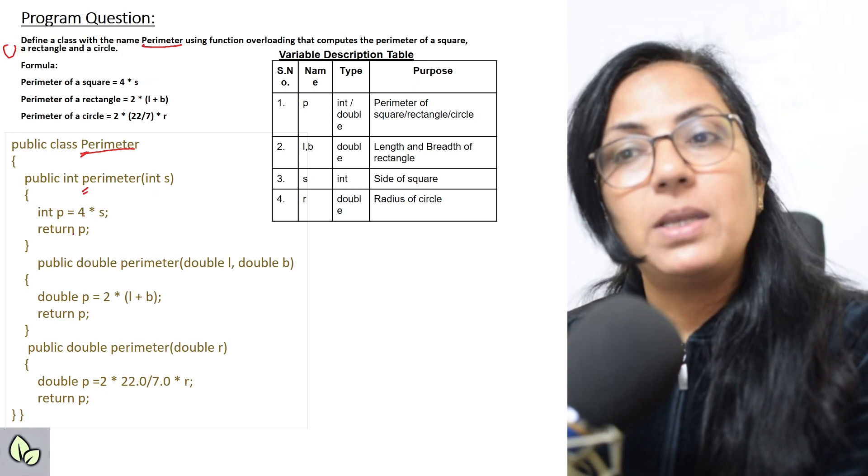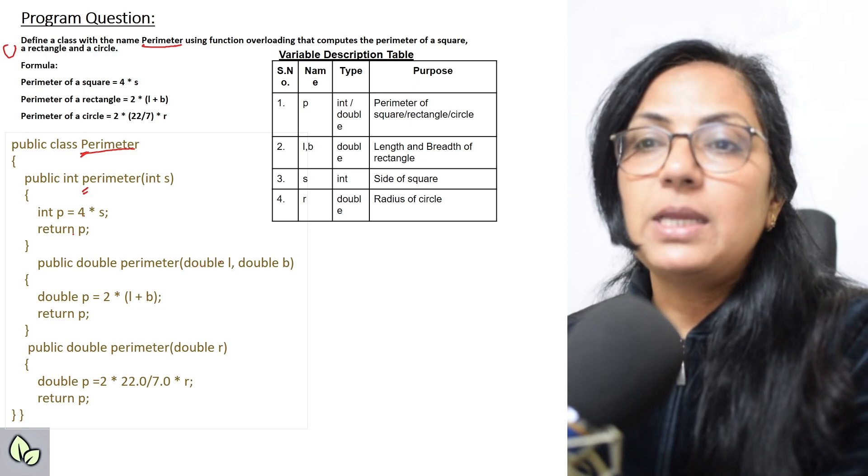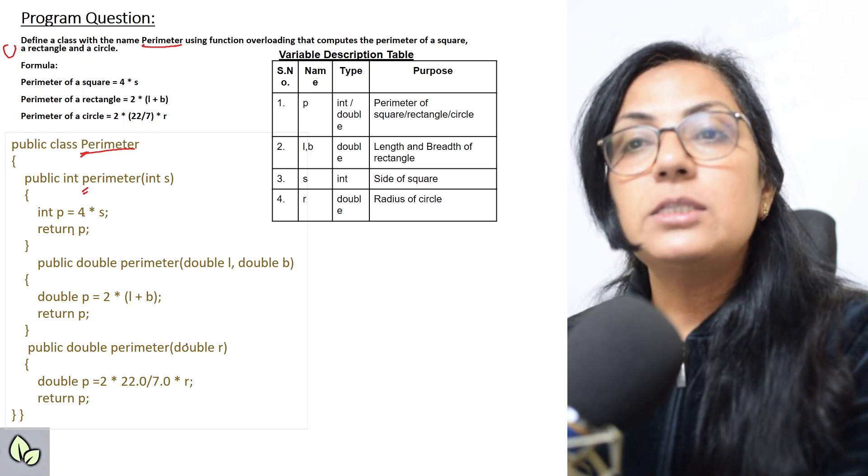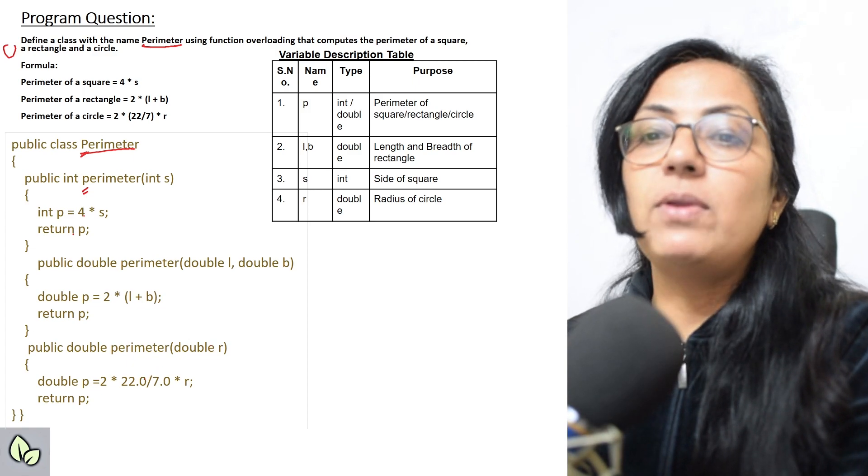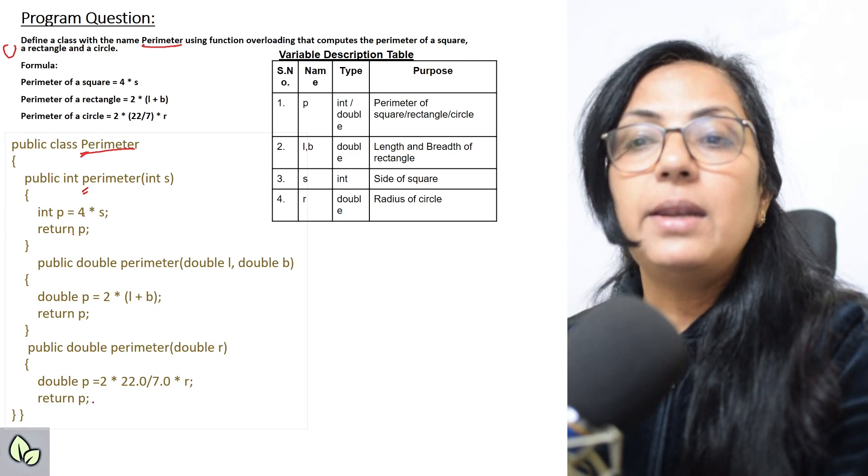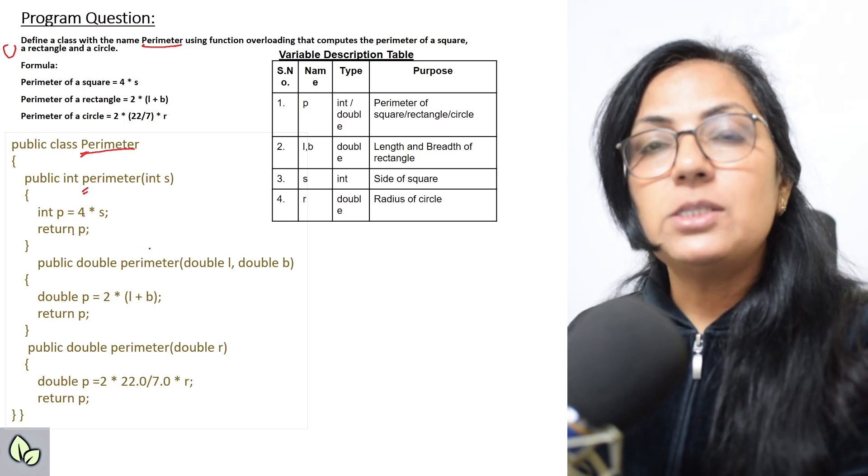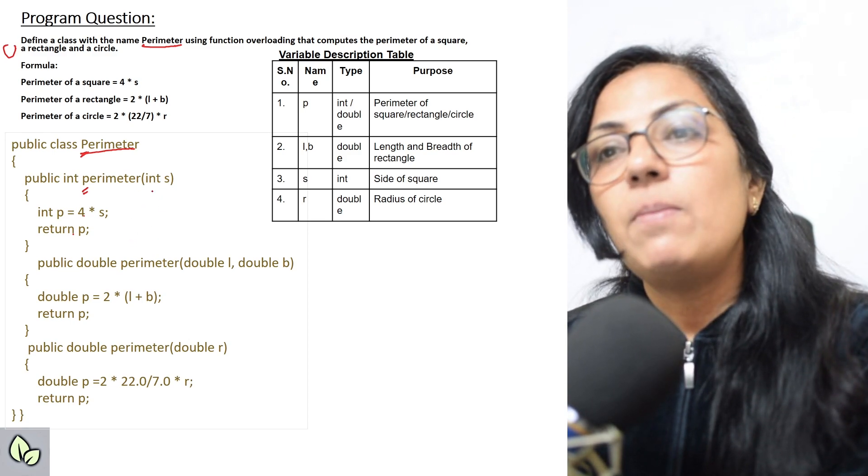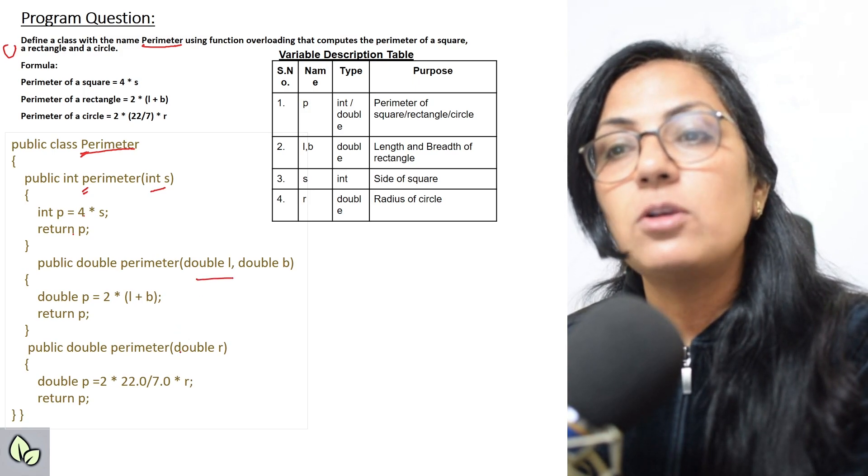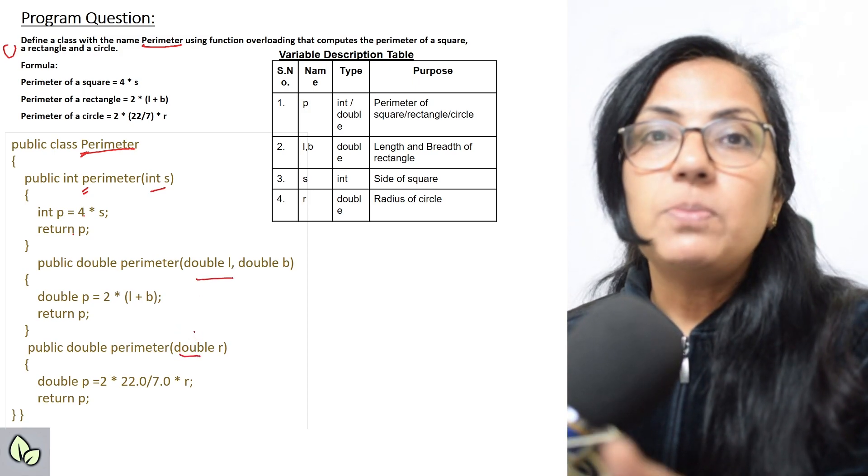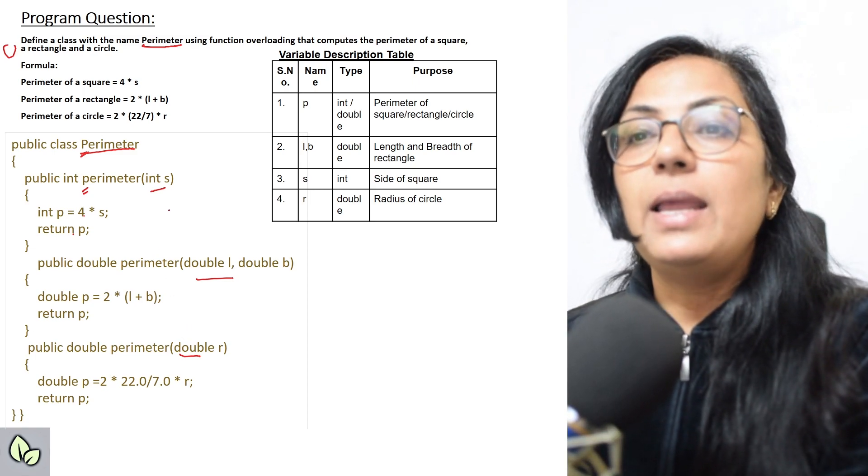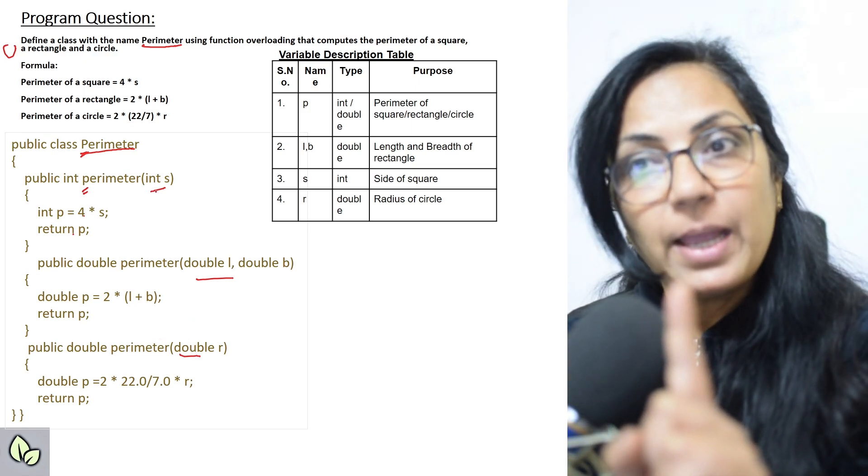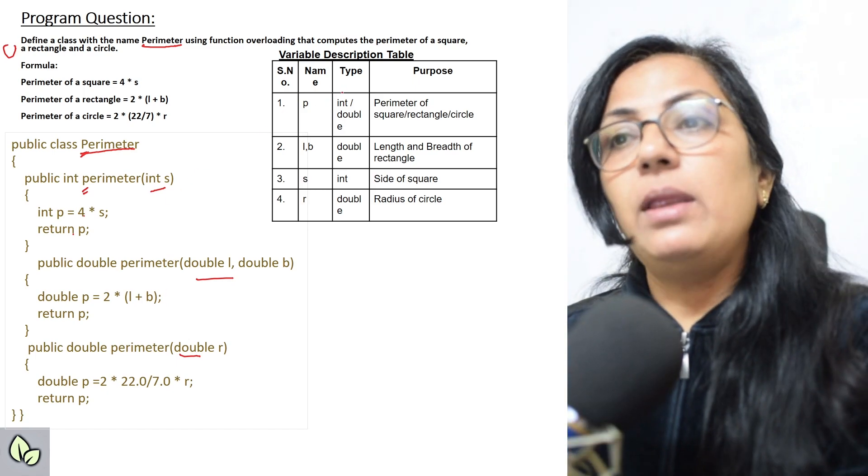Int s, it is receiving one side and calculating the perimeter, returning perimeter. Then double parameter for rectangle, it is taking two double type values, length and breadth, calculating and returning. Then third is for circle, double radius we are accepting, and it is calculating radius of a circle and returning that. Children, always please note that whenever you are using function overloading, the function name remains same, and they are differentiated by the means of their parameters. Parameters means either the number of parameters or the type of parameters. Like here, one is int, and here one is double, one, one, but they are differentiated with the means of int type.